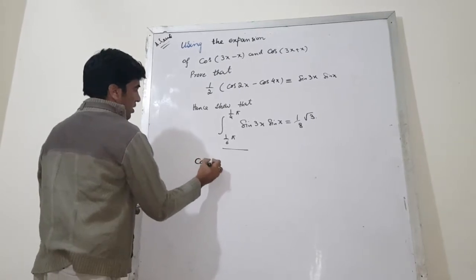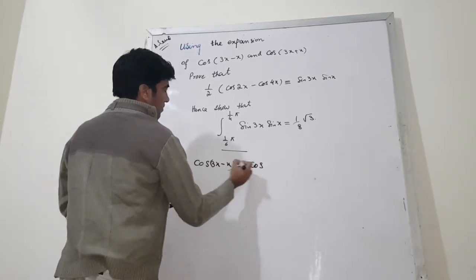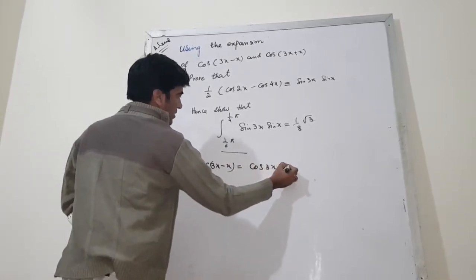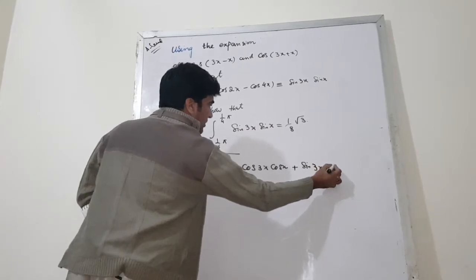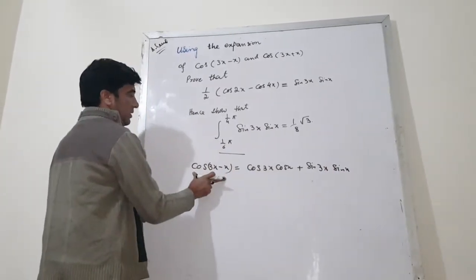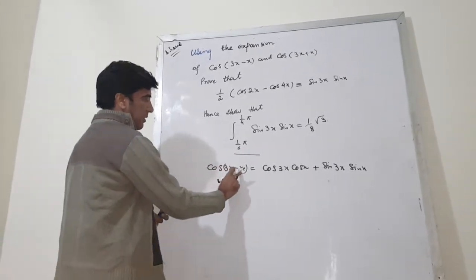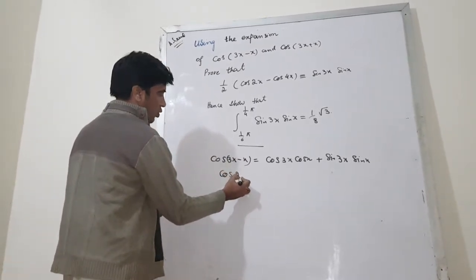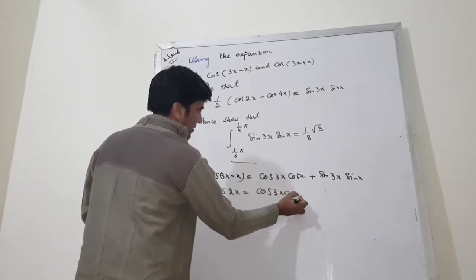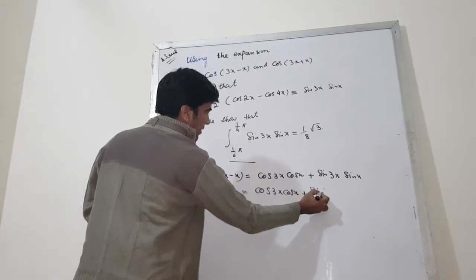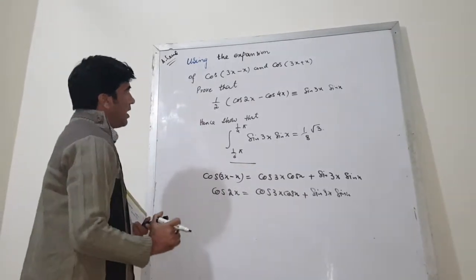This would be cos 3x cos x plus sin 3x sin x. This expansion is equal to cos 2x. This expansion, the expansion of this is equal to this. And further, if you see, 3x minus x can be written cos 2x. So, cos 3x cos x plus sin 3x sin x. This expansion is equal to cos 3x cos x.